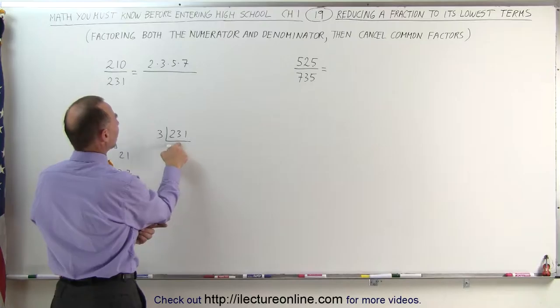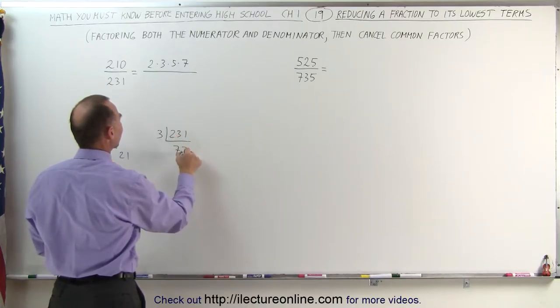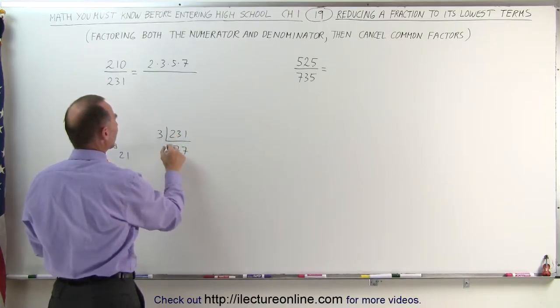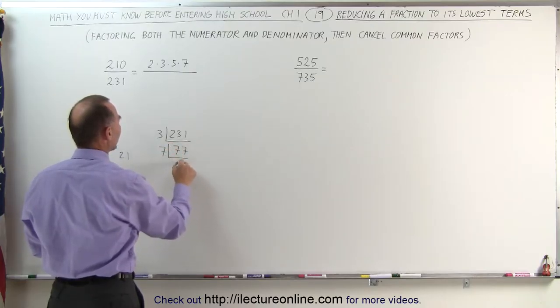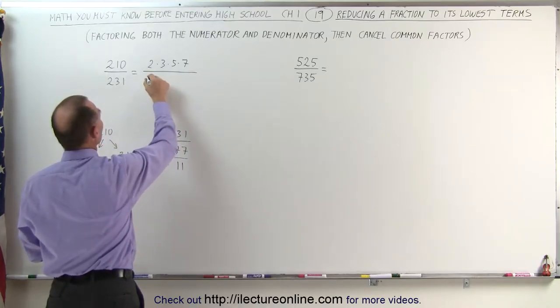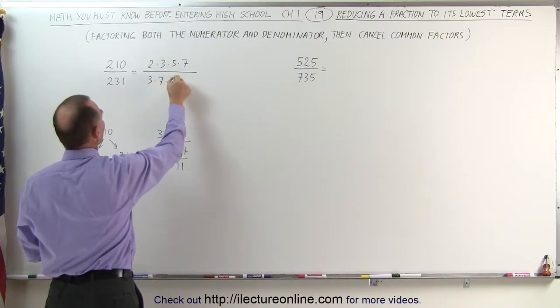70 times 3 is 210, that leaves us 21, that means 77. 77 can be divided by 7, which gives us 11, which means that 231 can be written as 3 times 7 times 11.